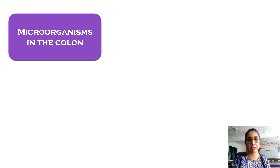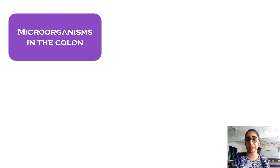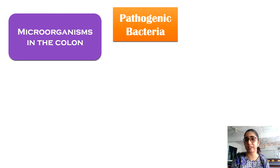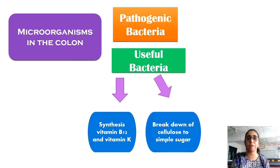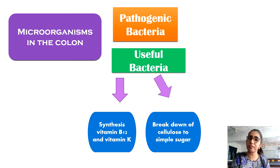Now let's look into the role of microorganisms in the large intestine. The large intestine has a huge population of bacteria — about 1,000 different species. It provides a habitat for two different groups of bacteria: useful bacteria and harmful pathogenic bacteria. E. coli is the useful bacteria normally found in the colon. The bacteria live symbiotically in the colon by digesting organic substances and producing vitamins B and K.